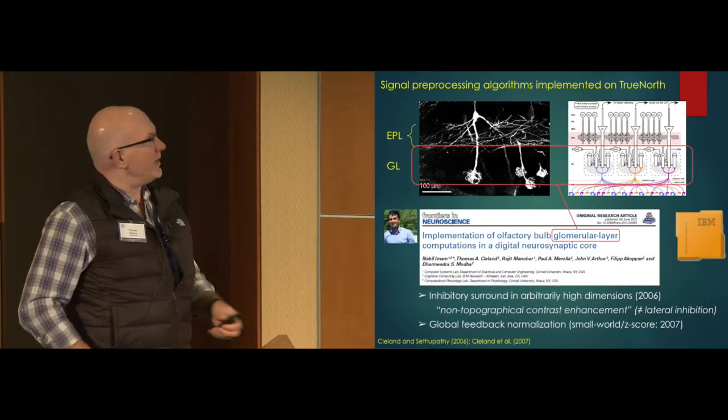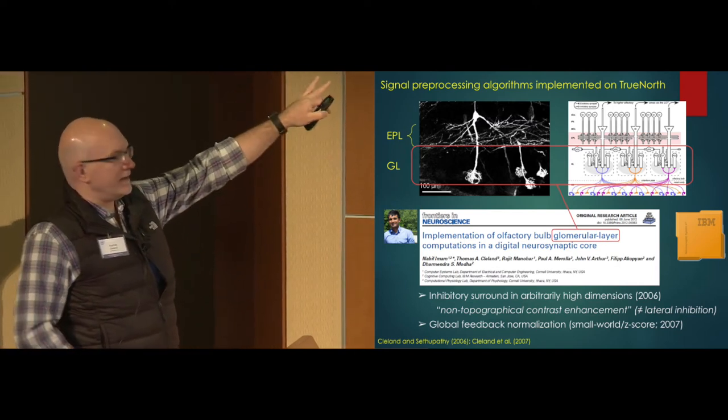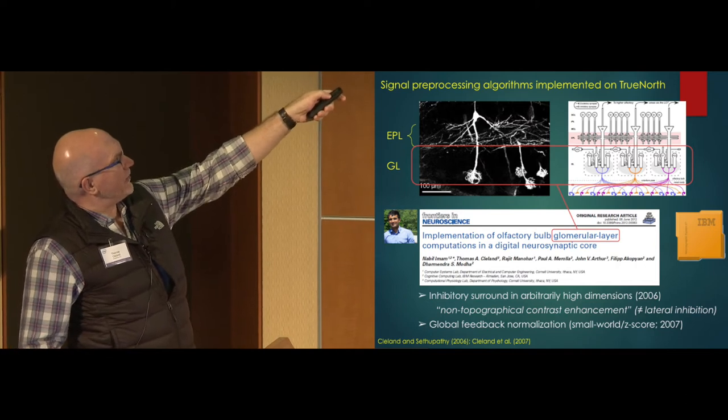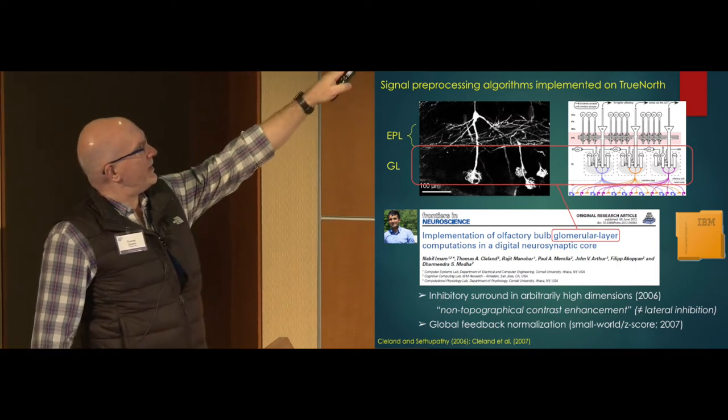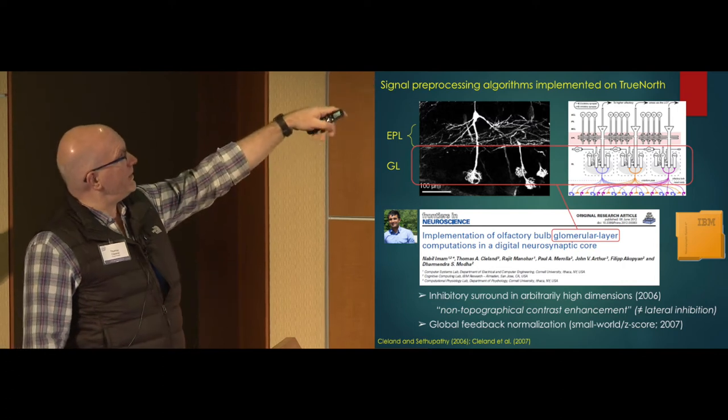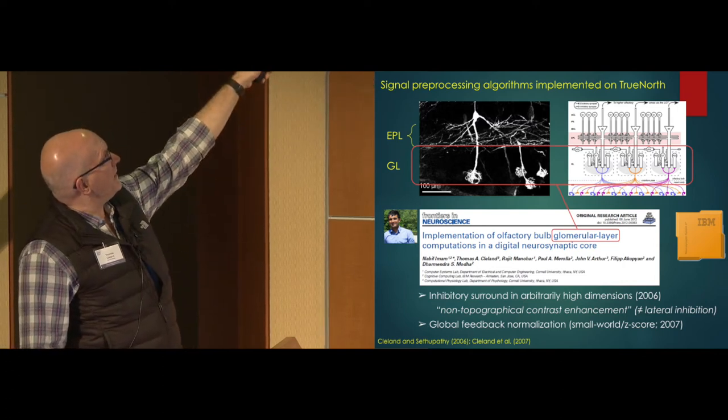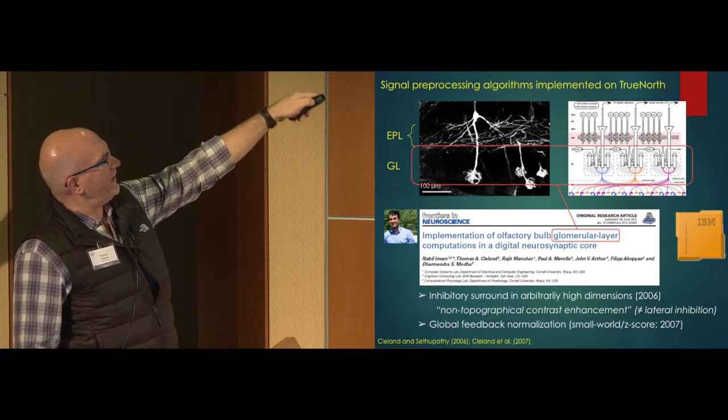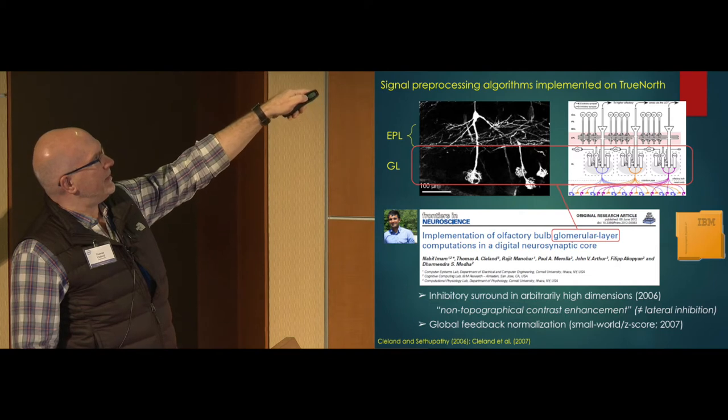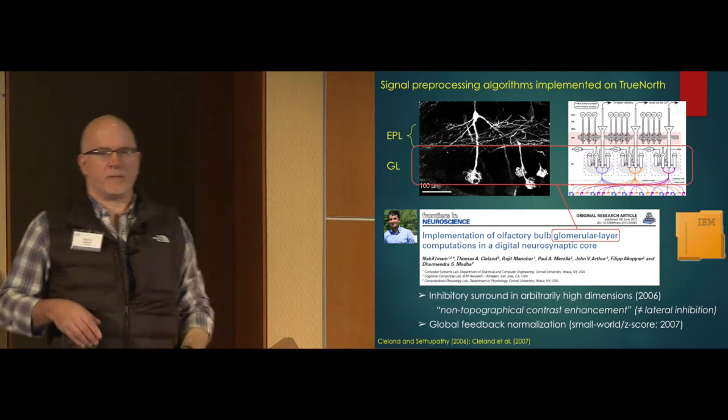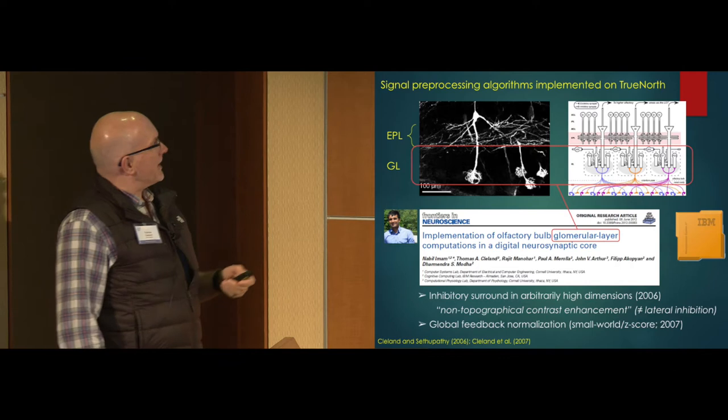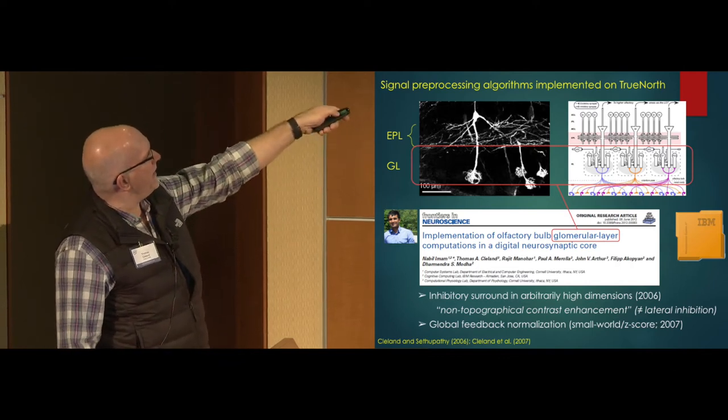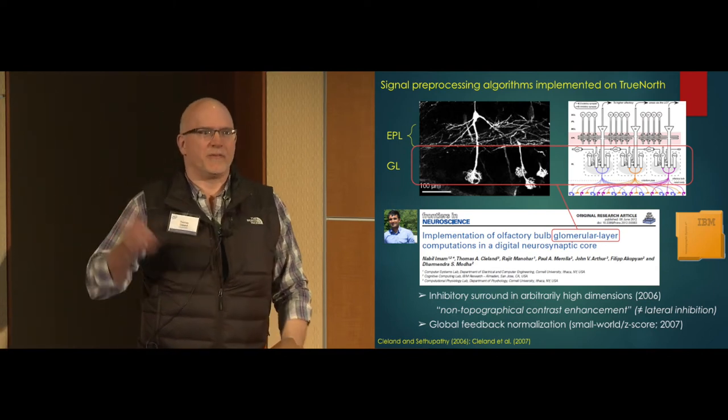We're not completely new to neuromorphic transformations. Nabeel and I, and collaborators at IBM, implemented or extracted algorithmic details from and implemented them in TrueNorth in 2012 for what we think of as the algorithms of this first layer, the glomerular layer. So sensation comes in the bottom, in the nose, crosses the blood-brain barrier. This glomerular layer of the olfactory bulb has transformations that I and my collaborators elucidated, I guess, a decade ago now.